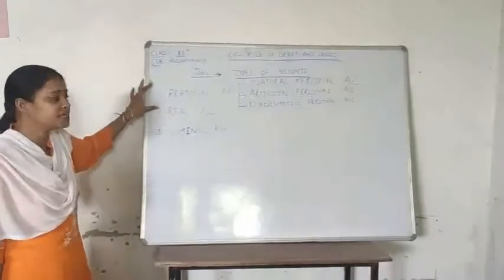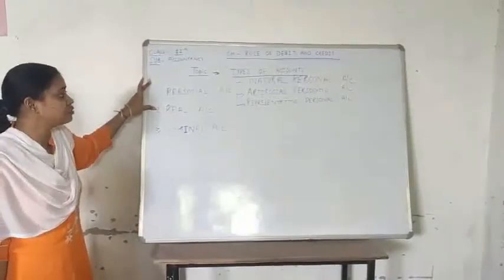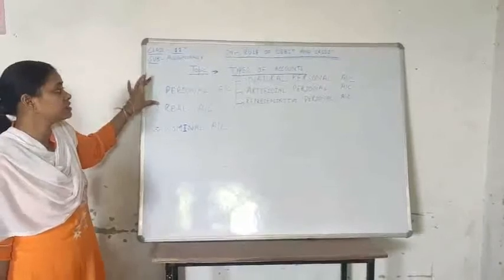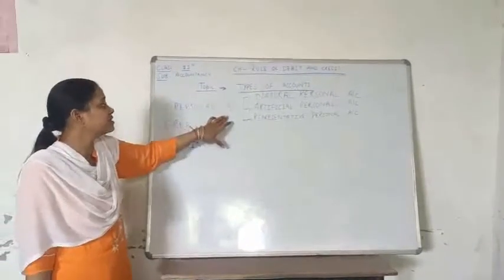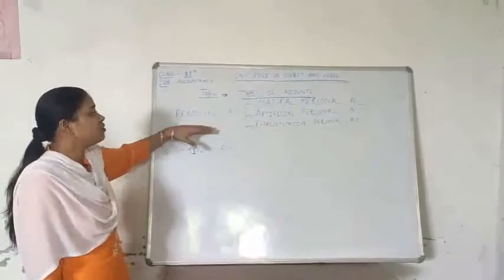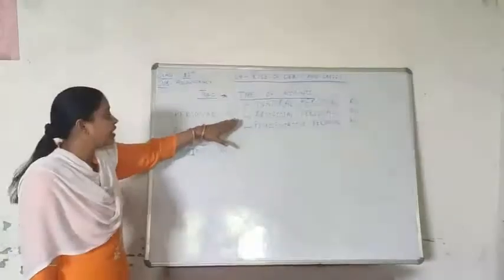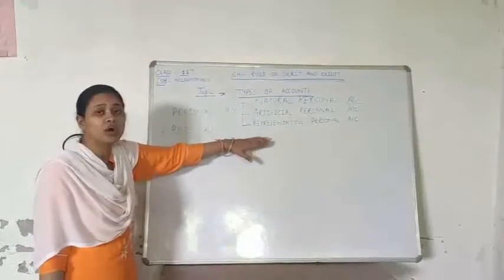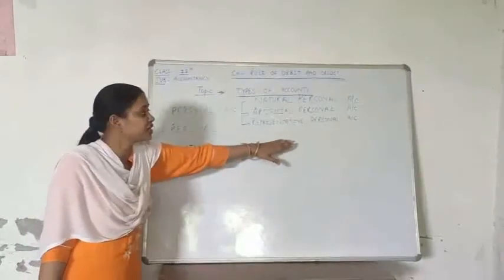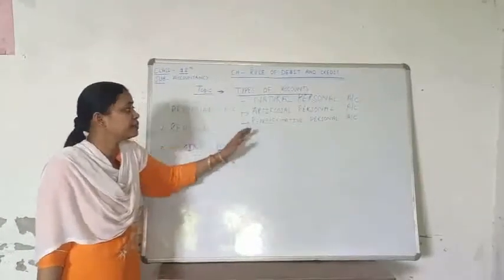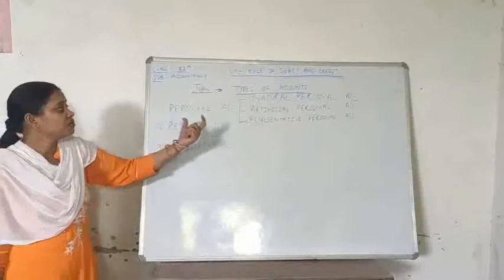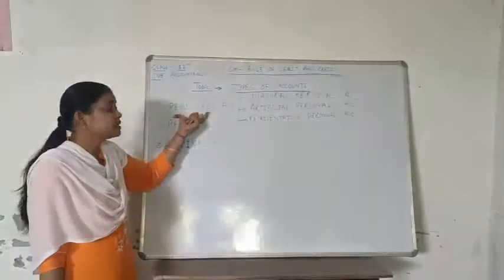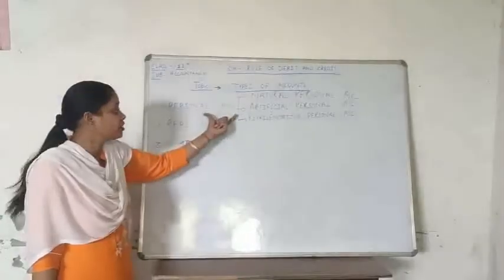The first account is personal account. Personal account is the account in which we involve persons, artificial forms or artificial companies, and representative groups which display the personal forms.